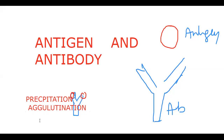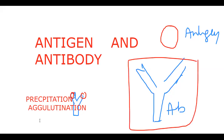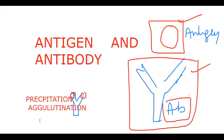The very important thing to remember: you cannot see an antibody even with a microscope. You cannot see an antigen — the fragment of a microbe — even under a microscope, because they are biomolecules. They are proteins. We can't see them. But whenever an antigen and antibody bind each other, you can see it in the form of precipitation or agglutination.